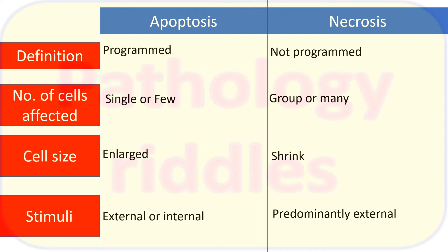In apoptosis, single or a few cells may be affected; in necrosis, a group of cells may be affected. In apoptosis the cell size will enlarge; in necrosis the cell size will usually shrink, though it might enlarge. The stimulus in apoptosis may be external or internal, but in necrosis it is predominantly an external stimulus.